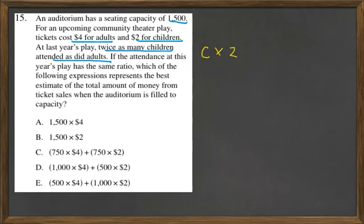B: are 1,500 of them $2, which is children? No, there's still adults there. There's just twice as many children as adults.